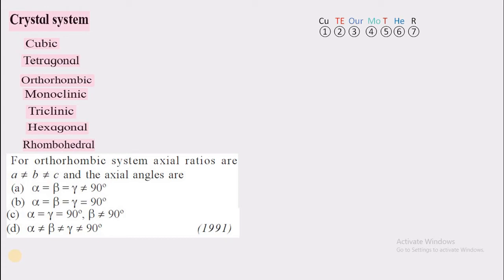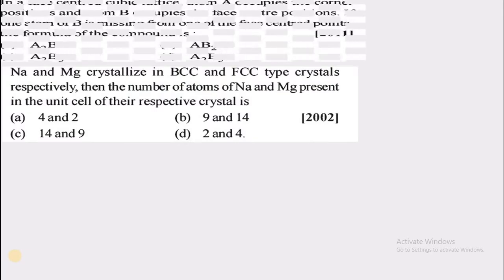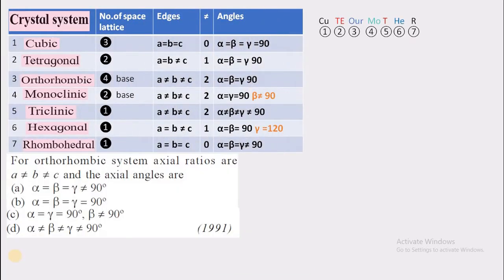Hello friends, welcome to our lecture series on 12th New Syllabus 2020 Chemistry, Chapter No. 1, Solid State. We have already studied how to calculate the number of particles per unit cell in simple cubic and body centered cubic, and also seen 14 Bravais lattices. Today we are going to see the relationship between molar mass, density of a substance, and unit cell edge length.